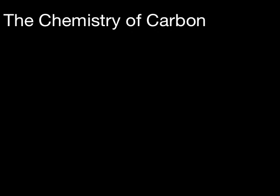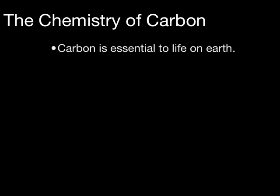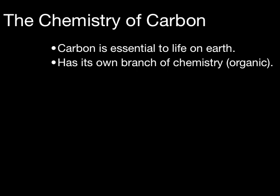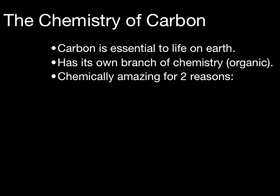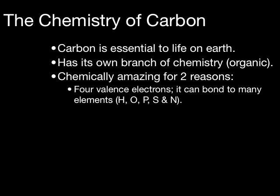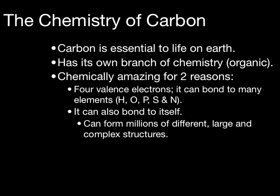Of the 110 known elements on the periodic table, carbon is one of the most important to living things — it is absolutely essential to life on Earth. Carbon is so important that it even has its own branch of chemistry called organic chemistry. Carbon is chemically amazing for two main reasons: first, it has four valence electrons, which means it can bond to lots of different elements such as hydrogen, oxygen, phosphorus, sulfur, and nitrogen. Second, carbon can bond to itself, and by forming these complex bonds, it has the ability to form millions of different, large, and extremely complex structures, making it one of the most versatile elements on the periodic table.